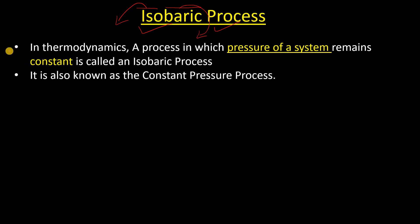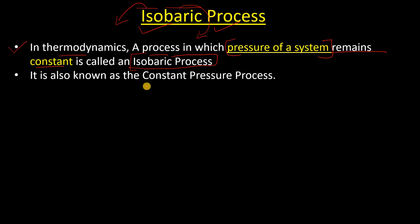What is the definition of isobaric process? In thermodynamics, a process in which the pressure of a system remains constant is called an isobaric process. During a process, if the pressure of a system remains constant, it is called the isobaric process. It is also known as the constant pressure process.